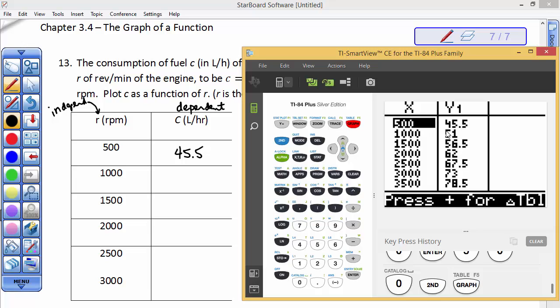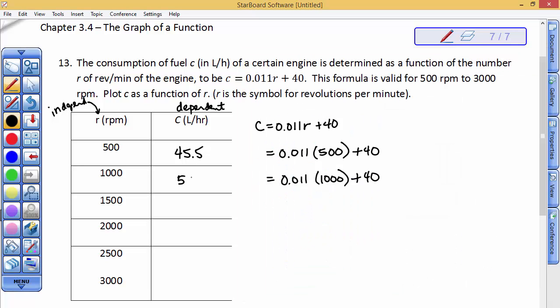51 at 1000, 56.5, 62. I have these recorded, so I'm going to go ahead and write them down. So 51, 56.5, 62, 67.5, and 73.